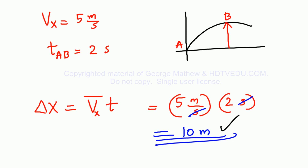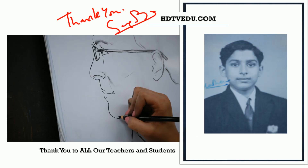So what is the position of point B with respect to point A? The x position is 10 meters and the vertical position is 19.6 meters above point A. So the coordinates of point B are (10, 19.6). And this is George Matthew signing off. Good luck.